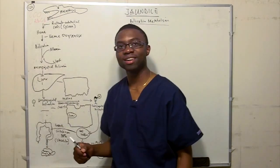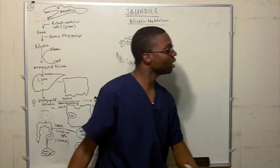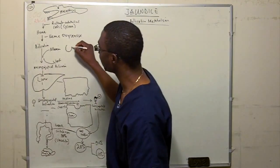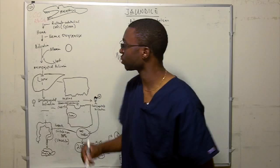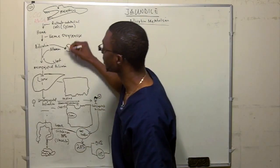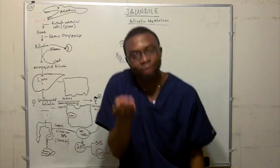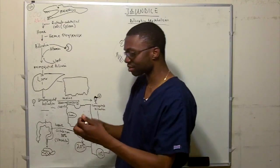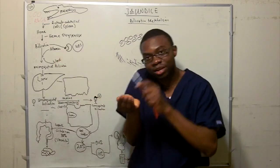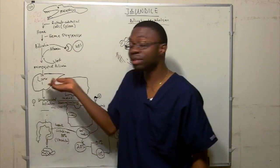Once bilirubin is made, it can't just float around freely. A transport protein — albumin — acts like a UPS carrier with a little pocket. Bilirubin binds to albumin, and this bilirubin-albumin complex is shipped all the way to the liver. The iron from the broken heme is also recycled back inside the spleen.